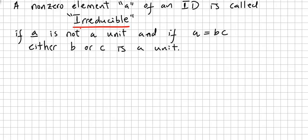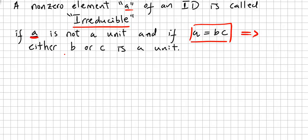Now we recheck the concept of irreducible. A non-zero element A of an integral domain is called irreducible if A is not a unit, and if A equals BC, this implies that either B or C is a unit. This is a very important concept in integral domains.